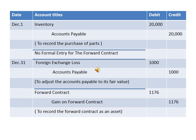Now we will record these transactions. On December 1st, the company purchased the parts from a foreign supplier. We need to record this purchase: Inventory will be debited and Accounts Payable will be credited. There is no formal entry for the forward contract on December 1st.